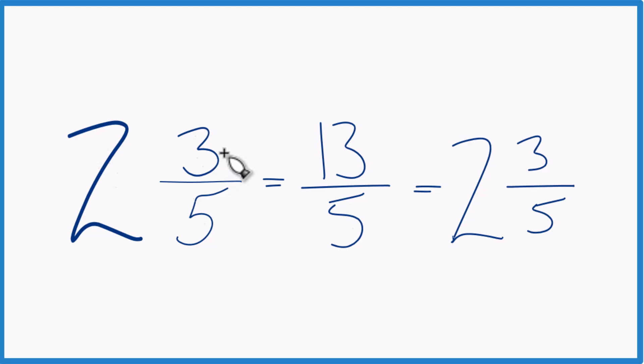And this is Dr. V, writing the mixed number 2 and 3 fifths as an improper fraction. That answer, 13 fifths. Thanks for watching.